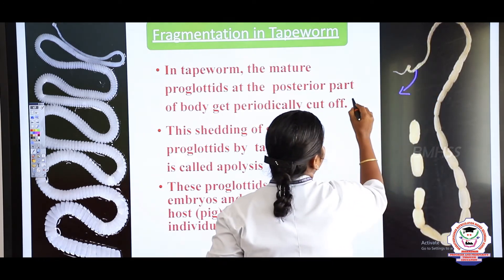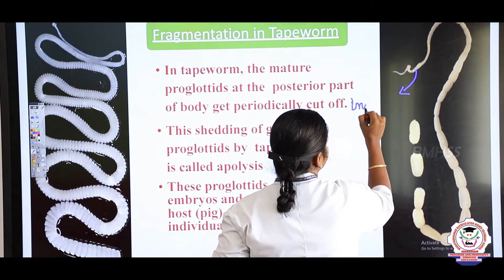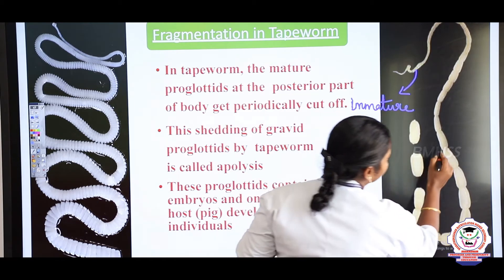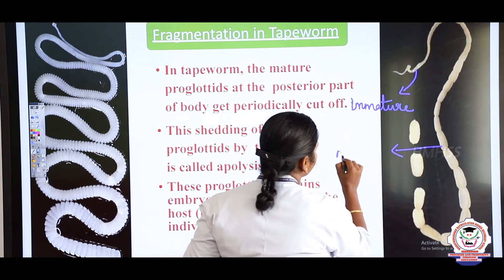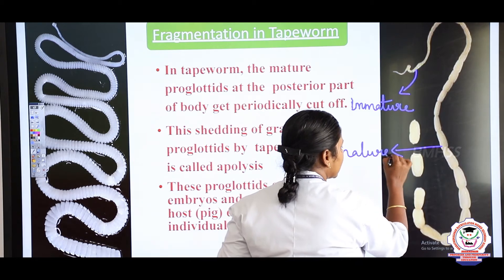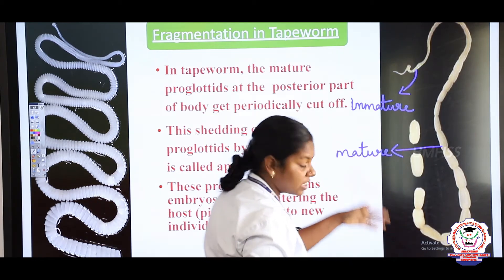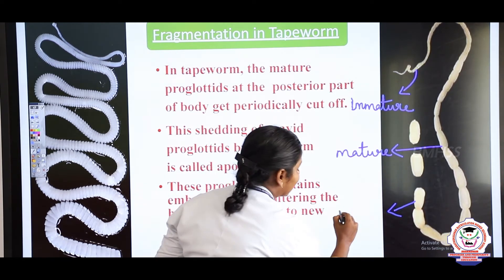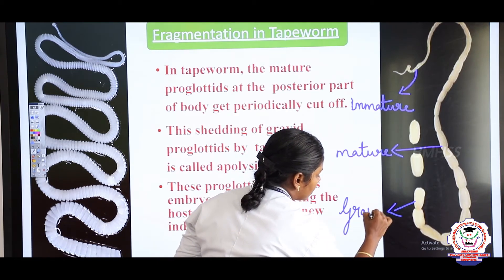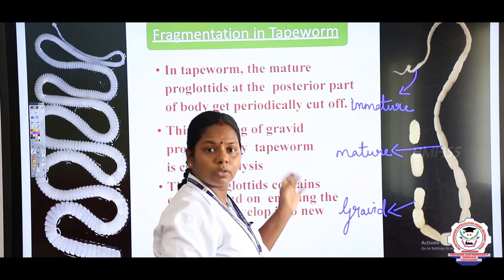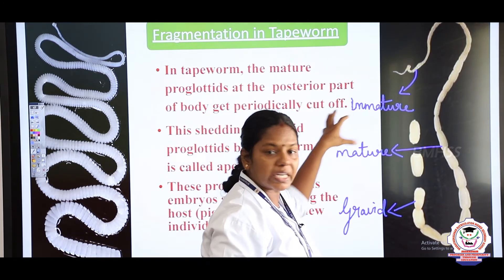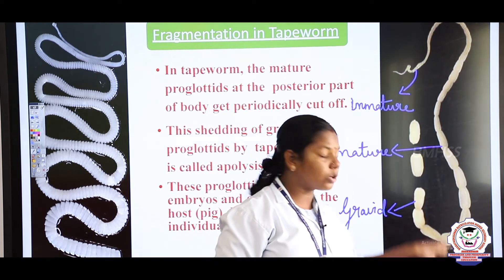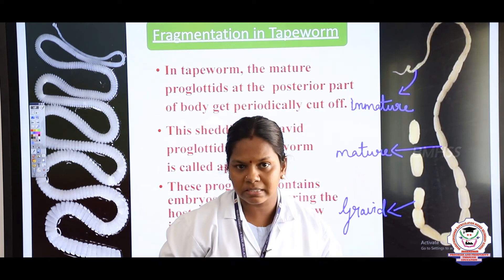The segments near the beginning are called immature proglotids. Near the middle region they are called mature proglotids. At the far end, the fragments containing fertilized eggs are called gravid proglotids. So the fragments are classified as immature proglotid, mature proglotid, and gravid proglotid, and the gravid proglotid contains fertilized eggs.